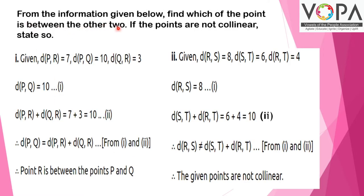Second question: From the information given below, find which of the point is in between the other two. If the points are not collinear, state so. Given: distance of PR = 7, distance of PQ = 10, distance of QR = 3. Distance of PQ = 10, that is the maximum value given there. Hence, distance of PR plus distance of QR is equal to 7 plus 3, which also equals 10. Therefore, distance of PQ equals equations 1 and 2. We can understand point R lies in between the points P and Q.